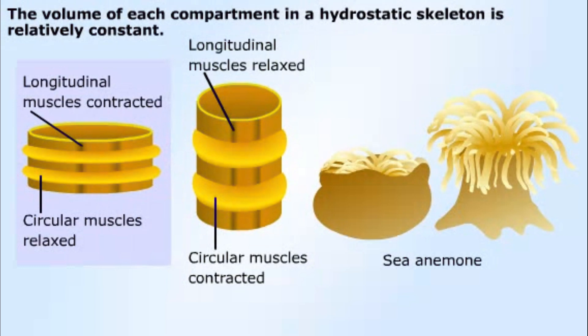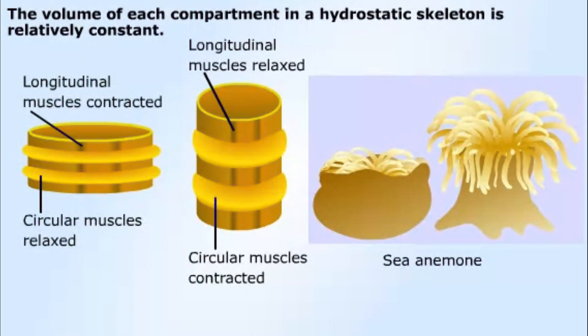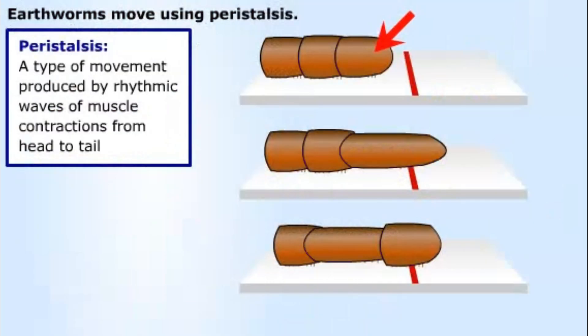Similarly, when the length of the compartment is decreased by contraction of the longitudinal muscles, earthworms and most other annelids use the ability to change the shape of the compartments in order to move.